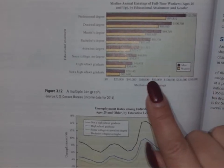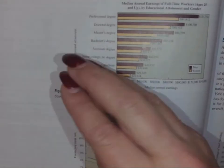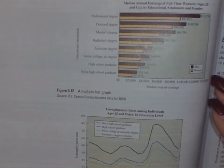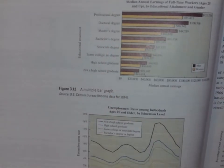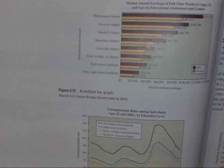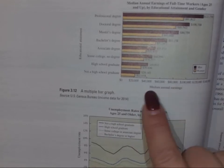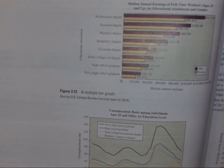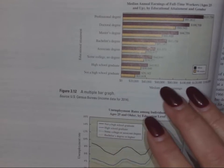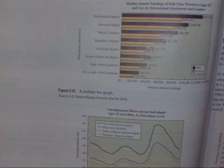Technically, income is dependent on education level, so the axes should be flipped: education as the independent variable belongs on the horizontal axis, and income as the dependent variable on the vertical axis. They didn't do that, and it still works, but that's the conventional way to set it up.